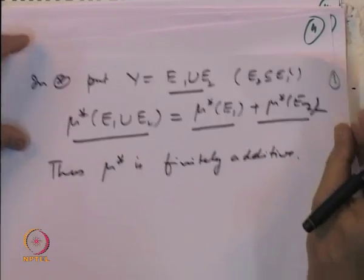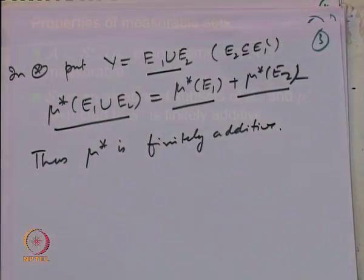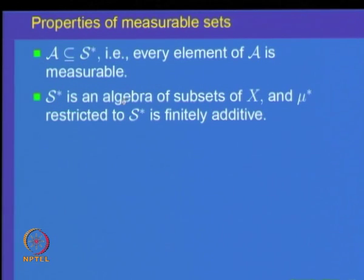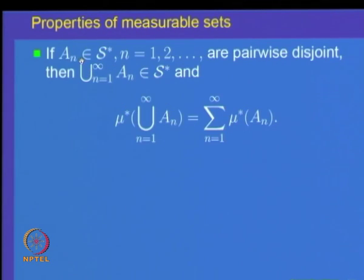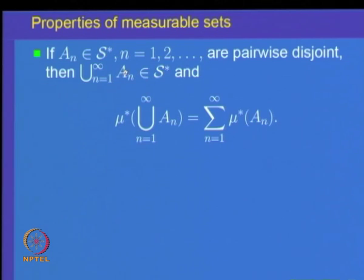We have proved that S* is an algebra of subsets of X and μ* restricted to S* is finitely additive. The next step is to prove that whenever we have a sequence of pairwise disjoint sets in S*, their union is also in S* and μ* of the union equals the sum of the individual μ* values. That is, S* is closed under countably infinite pairwise disjoint unions and μ* is countably additive.